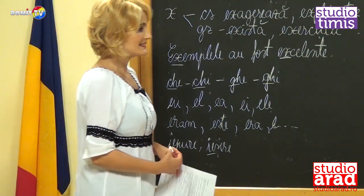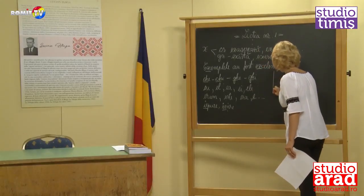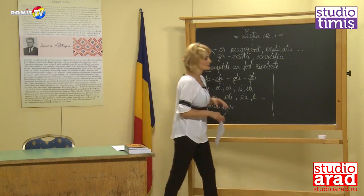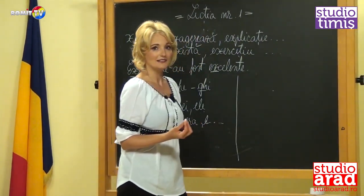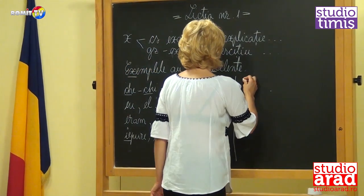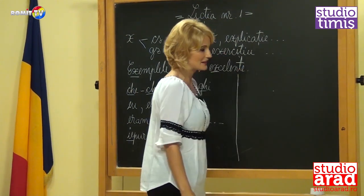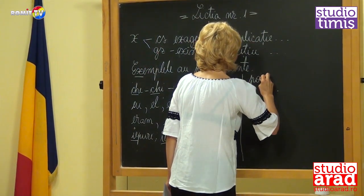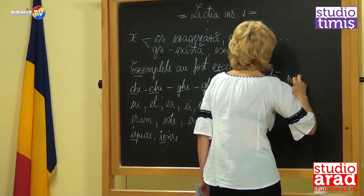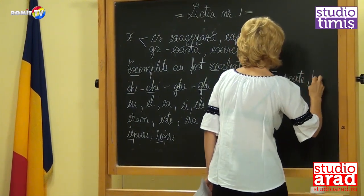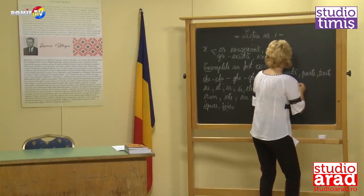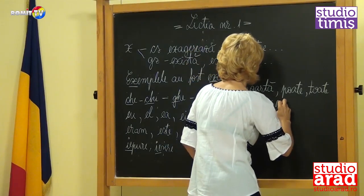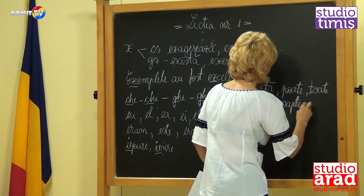Other problems with certain sound groups — which we can call diphthongs — for example, we have the sound group OA, which is heard as 'ua' in speech but which is written OA most of the time. I will give you some examples, because this diphthong is very frequent: poartă, poate, toate, moarte, șoapte, soare — and very many others.